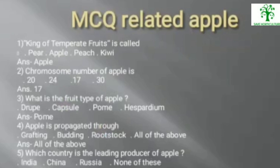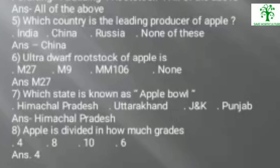MCQs: (1) King of temperate fruits — options: pear, apple, peach, or kiwi. Answer: apple. (2) Chromosome number of apple — options: 20, 24, 17, or 30. Answer: 17. (3) Fruit type of apple — options: drupe, capsule, pome, or hesperidium. Answer: pome. (4) Apple is propagated through grafting, budding, rootstock, or all of the above. Answer: all of the above. (5) Leading producer of apple — options: India, China, Russia, or none. Answer: China.